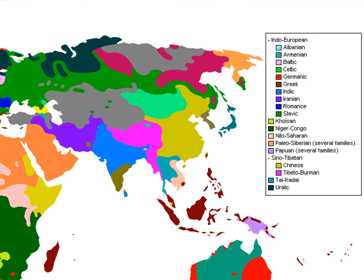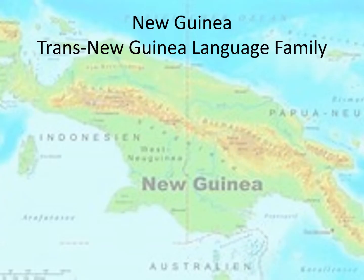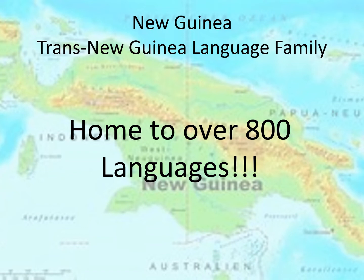Bananas are an old world crop with many different species. They are believed to have originated in Indonesia and the islands of New Guinea. Archaeologists have found evidence that goes back to at least 5000 BC, but they probably go back even further. The majority of languages spoken in New Guinea belong to the trans-New Guinea language family, home to more than 800 languages. Unfortunately, few of these languages stand out, and I was unable to find a reliable bilingual dictionary. Even if there were, it's unlikely we could find the exact word for banana from 7,000 years ago.